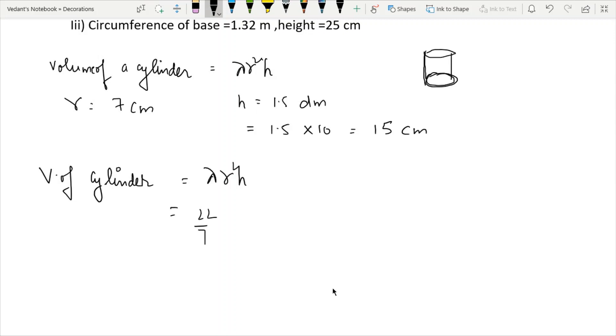Pi is 22 by 7, r is 7, 7 square h is 15. 7 and 7 cancels here. 7 times 14, take 14, we have 14 times 15, multiply by 50. 40, 60, carry 6, 15 by 5. We get 8, 1, 53, 35, 75, 20. The answer is 2,310 cm³. Let's start with the second part.